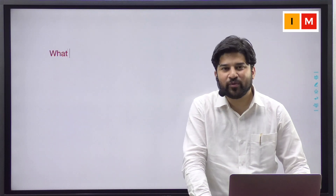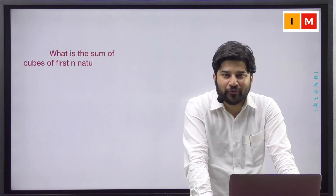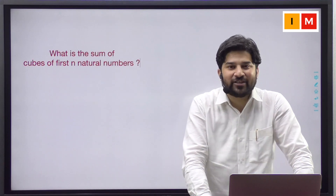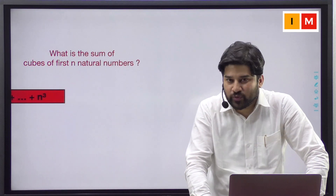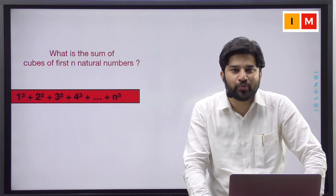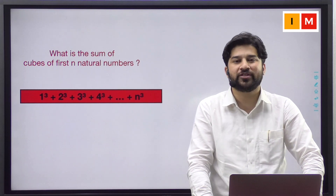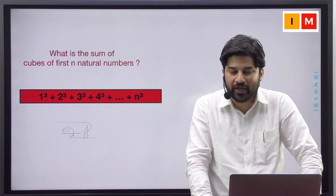What is the sum of cubes of first n natural numbers? That is, what is 1 cube plus 2 cube plus 3 cube up to n cube?